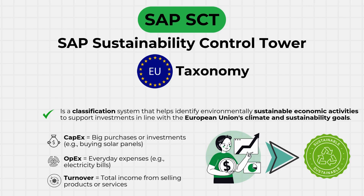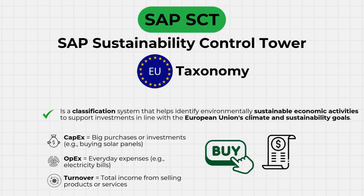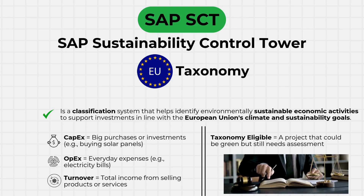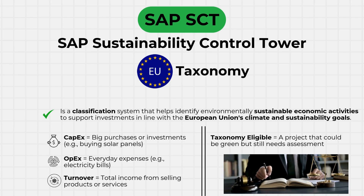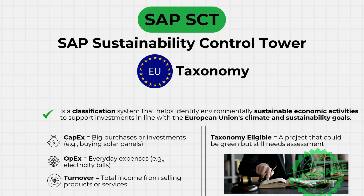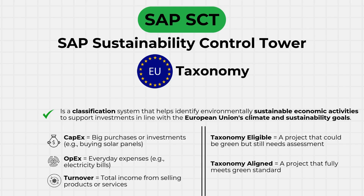Once we've listed purchases, everyday expenses, and total income, we can measure whether an activity is taxonomy eligible. An activity like buying a solar panel could be green, but still needs assessment. Green means the activity meets certain criteria established by the EU taxonomy — a set of rules guiding investors and companies on what can be classified as environmentally sustainable. If all those criteria are met, the activity is considered taxonomy aligned. The EU taxonomy is complex, but this gives you an overview.